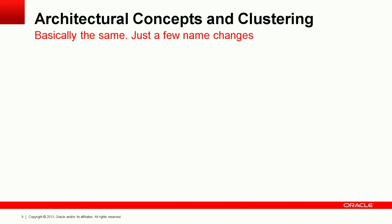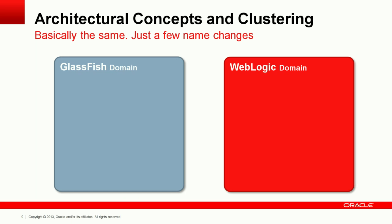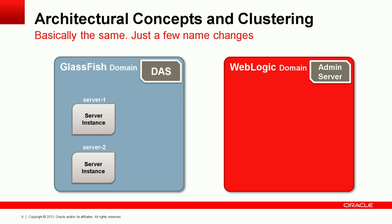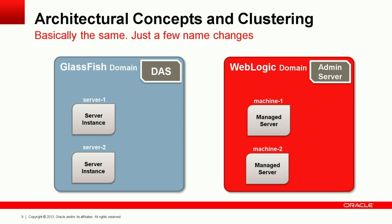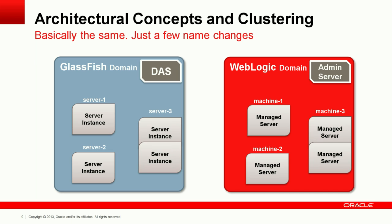A few architectural concepts must be understood, especially for clustered environments. The good thing is that the concepts are basically the same between GlassFish and WebLogic — you just need to be aware of a few name changes. For example, both domains have one administrative server: in GlassFish it's called DAS, and in WebLogic it's called AdminServer. For physical servers, GlassFish uses server instances while WebLogic uses the concept of machines, each running what are called managed servers. A machine can have two or more managed servers.